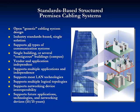Additional characteristics of a standards-based structured premises cabling system include: it should be an open or generic cabling system in its design; it should address industry standards-based single solutions; it should support all types of communication systems; it could be either a single building or several continuous buildings such as a campus; it's vendor and application independent; supports multiple applications and independents; supports most local area network technologies; supports multiple logical topologies; supports network device interoperability; and finally, it should support future applications, technologies, and networking devices for the next 10 or 15 years.